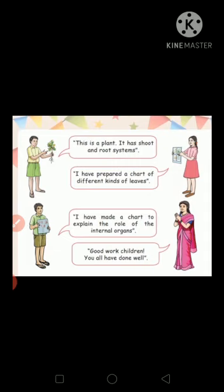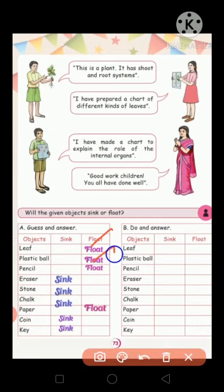Next, one girl said: 'I have prepared a chart of different kinds of leaves.' Another student said: 'I have made a chart to explain the role of the internal organs.' Another student demonstrated float and sink using objects: pencil — float; eraser, stone, chalk — sink; zinc — sink; paper — float; coin and key — sink.